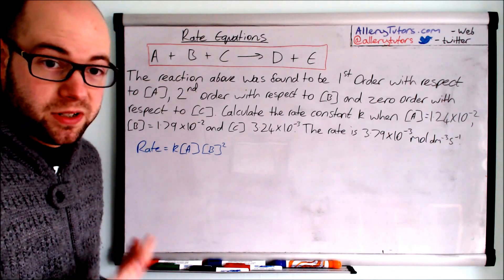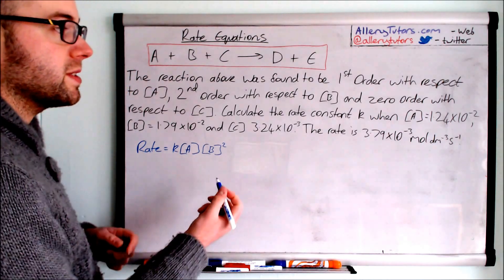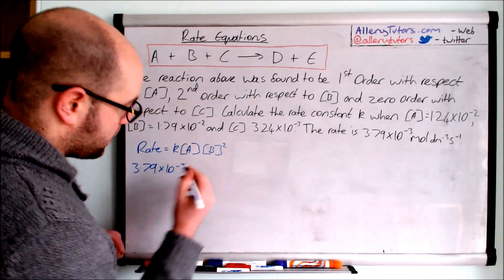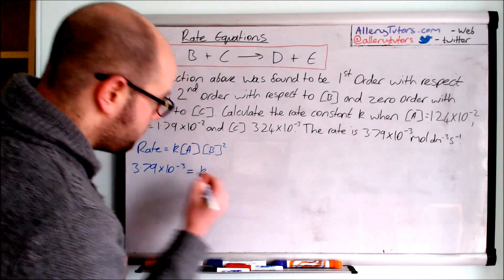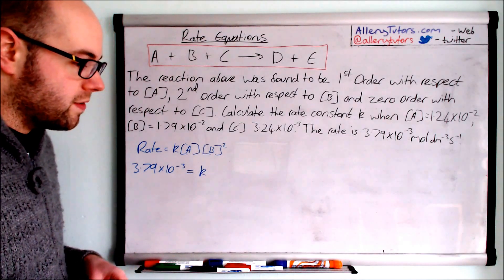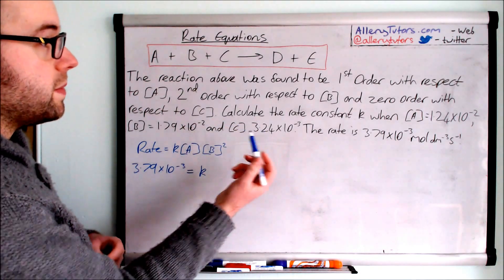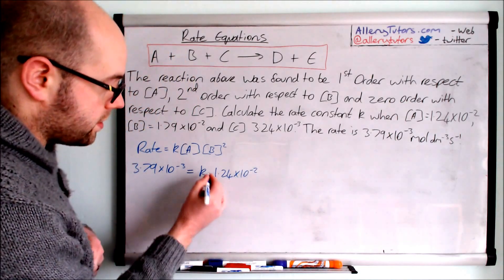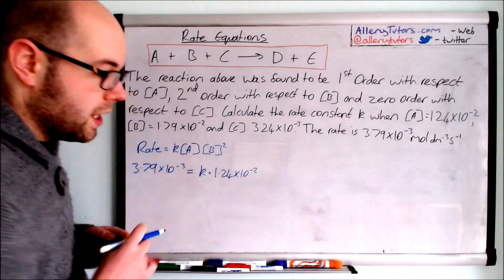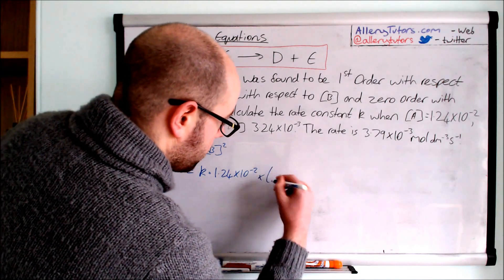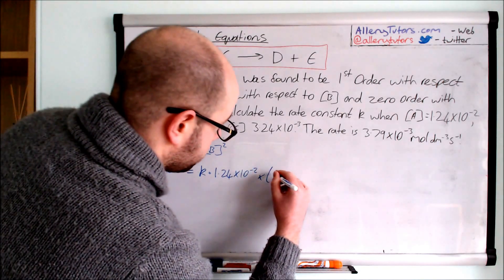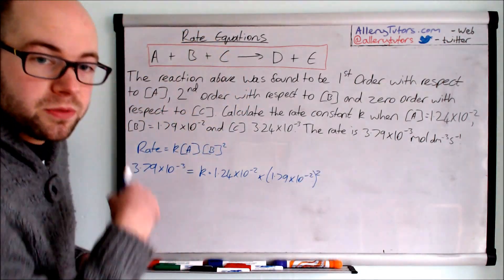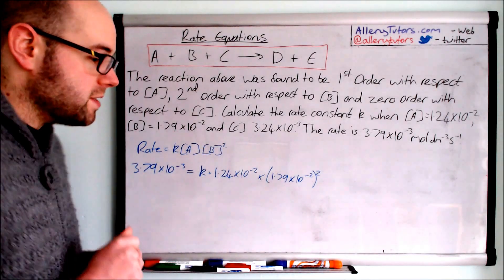Now we substitute the numbers into the rate equation. The rate is 3.79×10⁻³, which equals k multiplied by [A] = 1.24×10⁻², multiplied by [B]² where B = 1.79×10⁻², and that is squared because B is second order. So we have all our numbers in place.